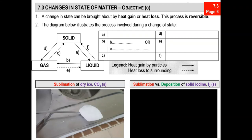All right, good morning class. Let's continue our lesson on the particle nature of matter. Today we are moving on to 7.3. Let's do a quick recap. Changes in state can be brought about by either heat gain — heat is absorbed by the substance — or heat loss, where the substance is cooled down, and this process is reversible.